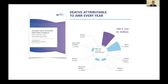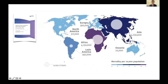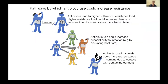So it's clearly a very serious problem. The overwhelming burden, both now and projected into the future, is in low and middle income countries. A graphic from the O'Neill report highlights that Africa and Asia currently experience the greatest burden and are projected to continue to do so.